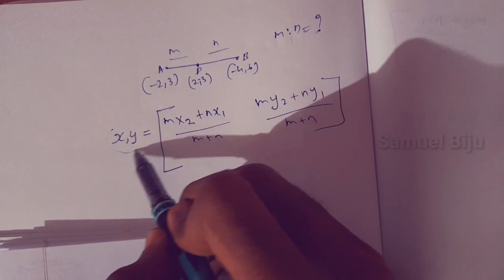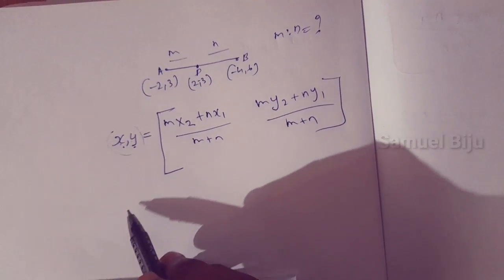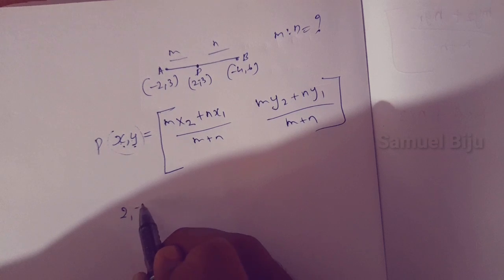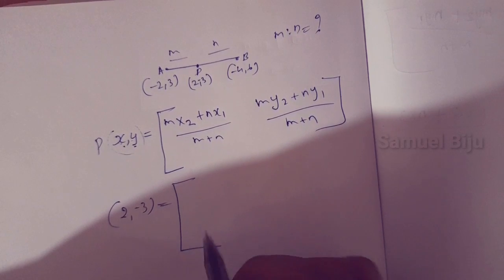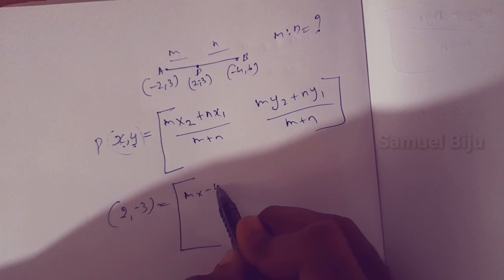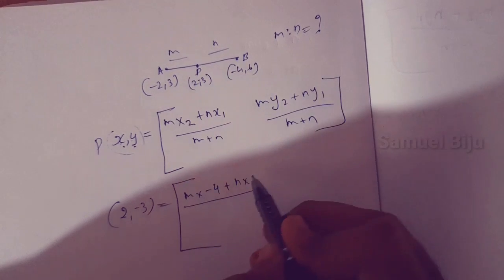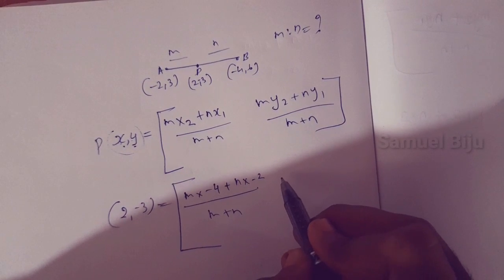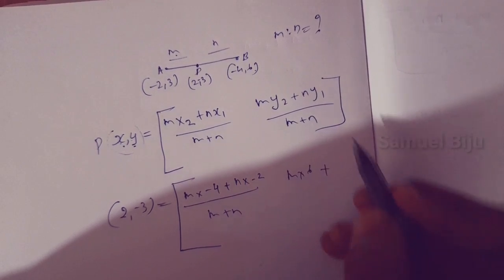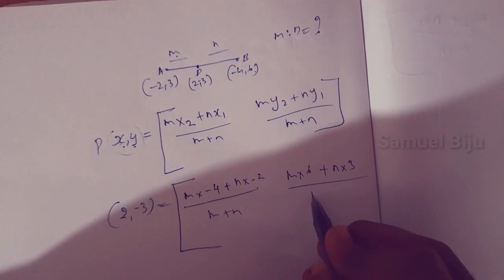Now we will add values into the formula. The given point (2, -3) gives us x equals 2. So: 2 equals m into x2, which is minus 4, plus n into x1, which is minus 2, divided by m plus n. For y: m into y2 is 6, plus n into y1 is 3, divided by m plus n.